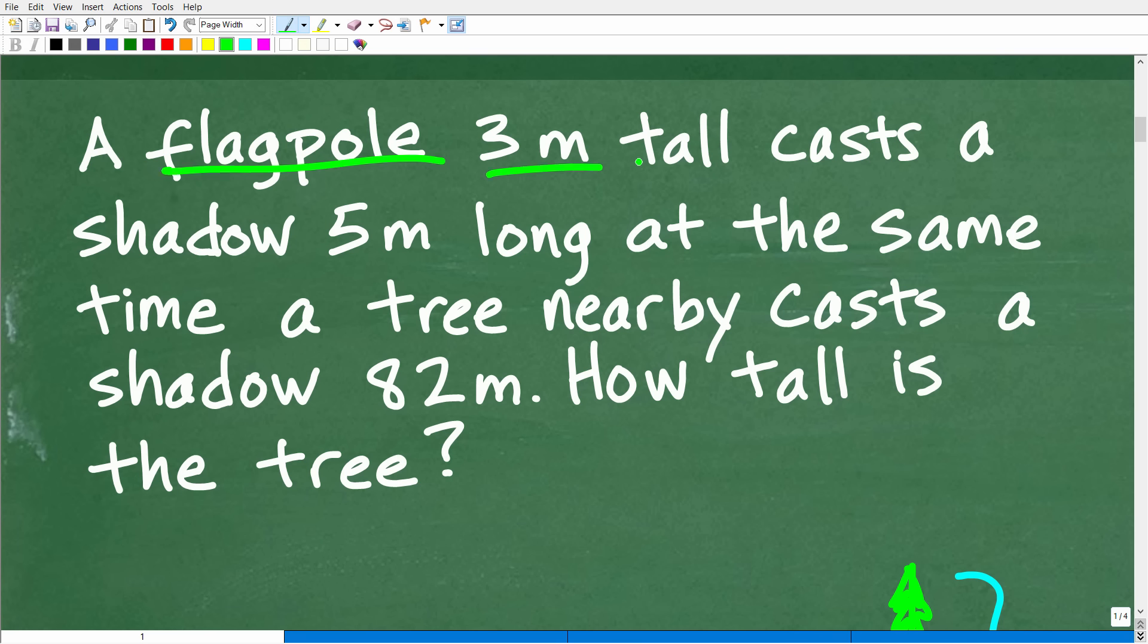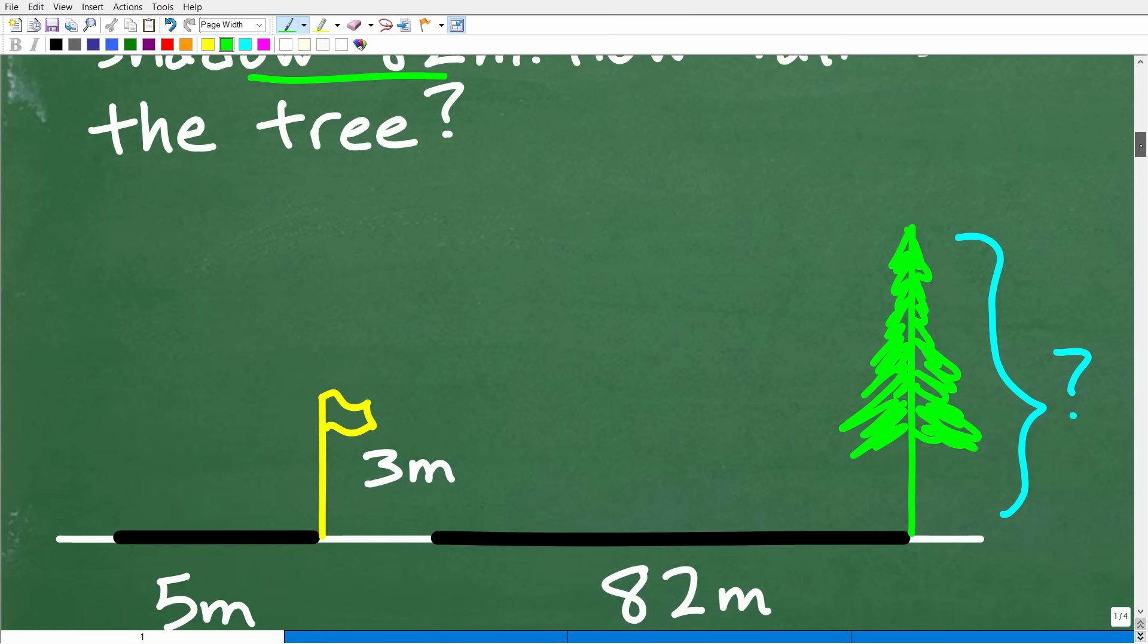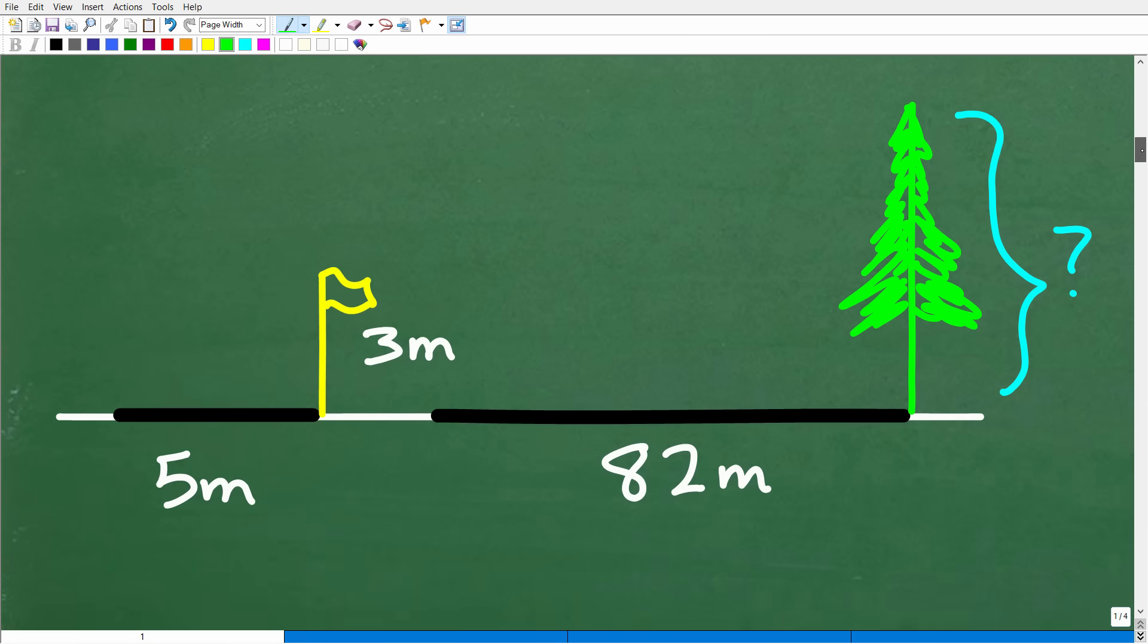So what we want to do is kind of draw a sketch that models what's going on. So we have a flagpole, three meters tall. It's casting a shadow. Then we have a nearby tree. It's casting a shadow as well. So let's go ahead and just come up with a quick sketch to see what's going on. All right, so here is the ground.